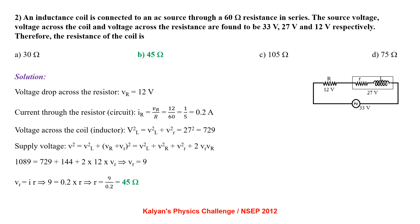Voltage drop across the resistor Vr equals 12V. Current through the resistor Ir equals Vr by R, i.e. 0.2A. Voltage across the inductor coil: Vl² equals Vl² plus Vr² where small r is the resistance of the inductor coil. Supply voltage V² equals Vl² plus (Vr + Vr)². Upon simplification, we get Vr equal to 9V, from which the resistance of the inductance coil equals 45 ohm.